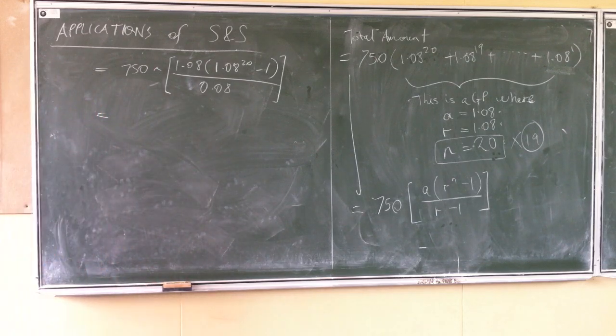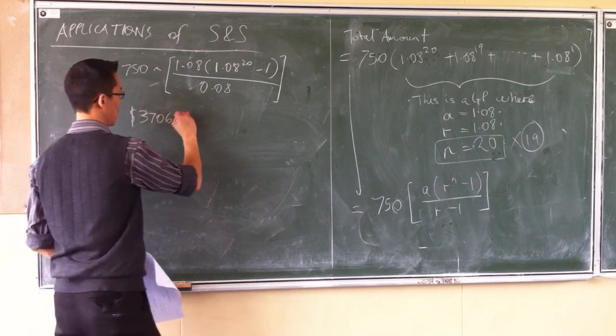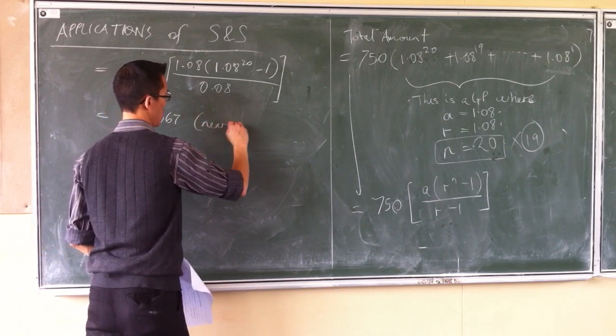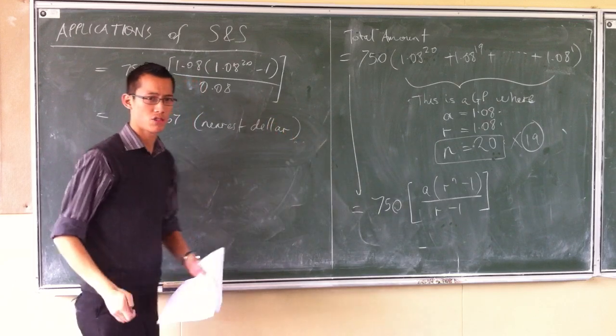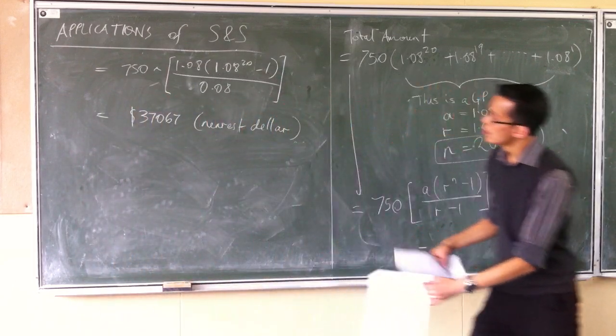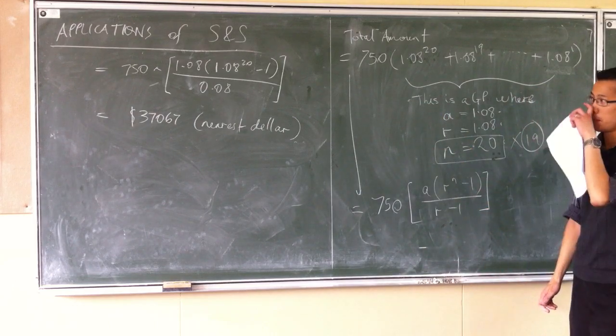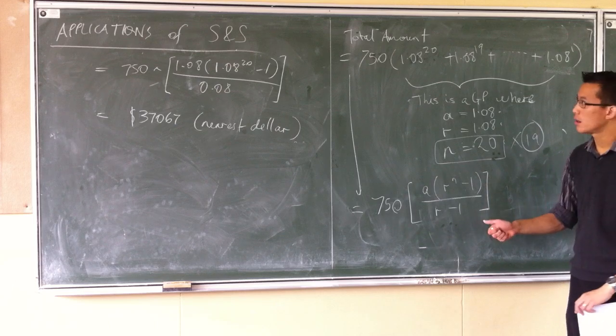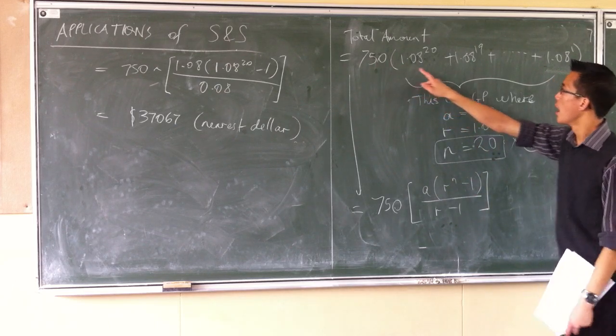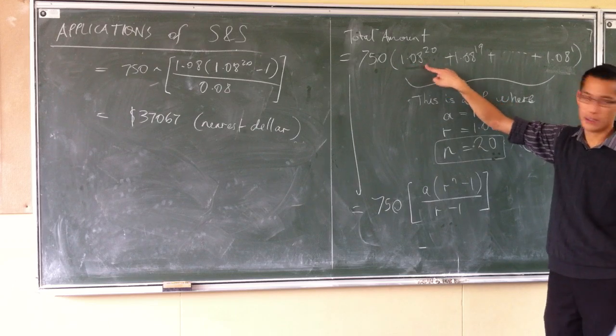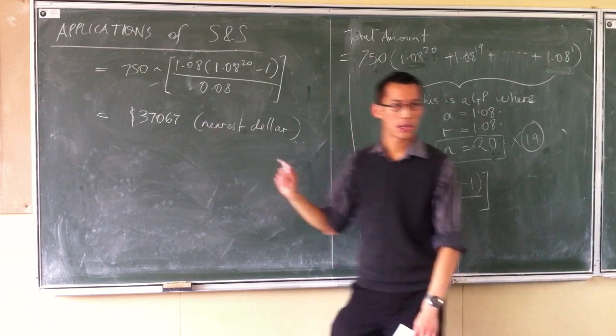And you get your answer out at the end. I think it's something like $37,000. There you go, there's a pretty typical question. What you got given was how much was put in every year, how much interest it was earning and how long. And then we generated what was the final amount.